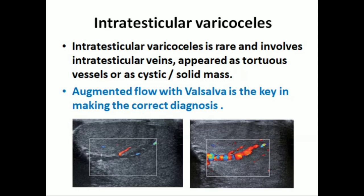Another variant is intratesticular varicocele. Intratesticular varicoceles are rare and involve intratesticular veins. They appear as tortuous vessels or a cystic/solid mass. This image shows dilated vessels with augmented flow on Valsalva, demonstrating increased blood flow.